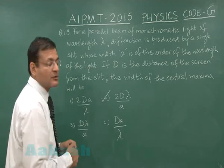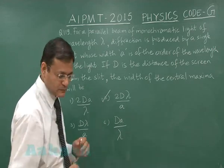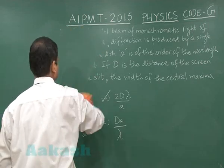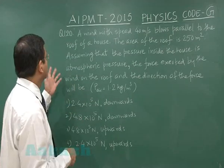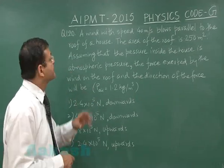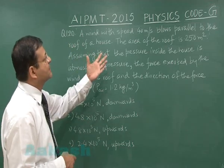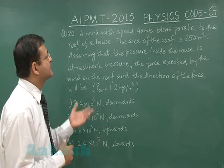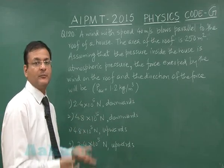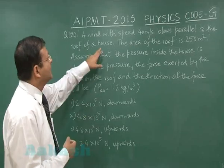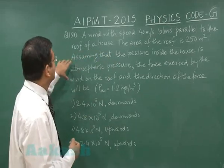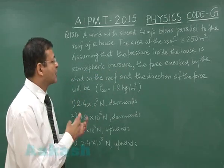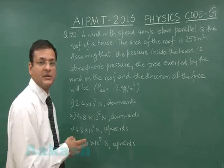Now question 120 is based on Bernoulli's principle. It says that a wind with speed 40 meter per second blows parallel to the roof of a house, so naturally the pressure there will be less and upward force will be exerted on the rooftop. Assuming that the pressure inside the house is atmospheric pressure, then the force exerted by the wind on the roof and the direction of the force will be upward.